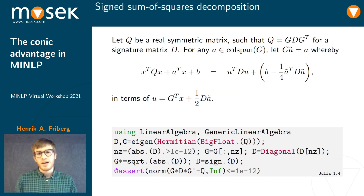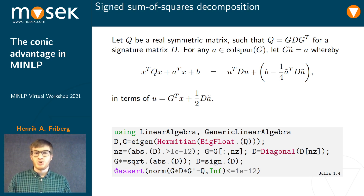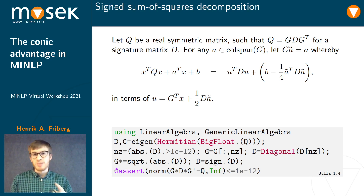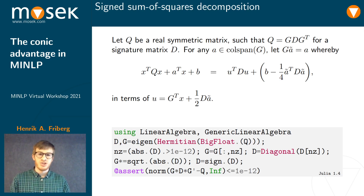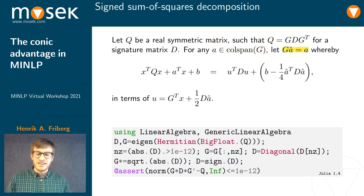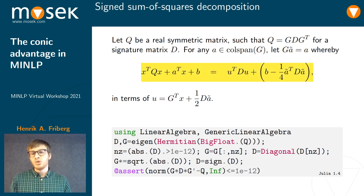For the next examples, it's going to be harder, and we'll need a signed sum-of-squares decomposition. For any real symmetric matrix Q, you can put it in diagonal form using eigenvalue decomposition. I'll assume D is a signature matrix, meaning all diagonal entries are ±1 – this is simply a matter of scaling and filtering out eigenvectors associated with eigenvalue 0. Julia code to automate this step is included. The result is that for any vector A in the column span of G, you can find column weights Ã to rewrite the general quadratic form as a signed sum of squares.